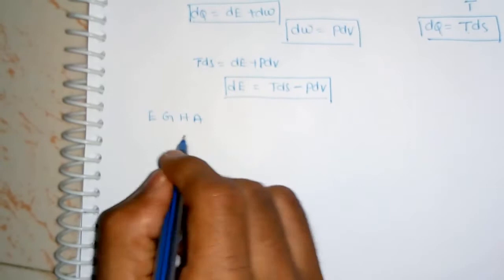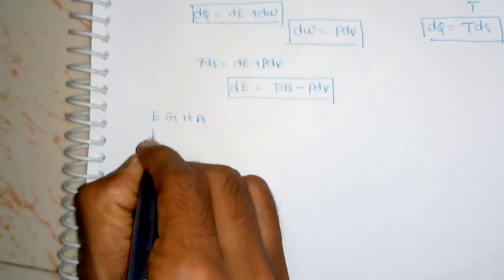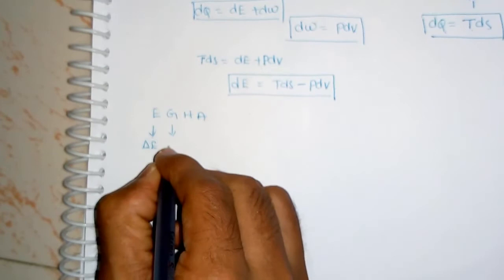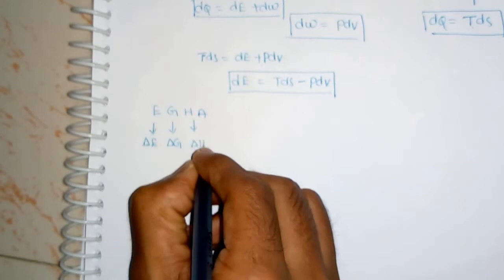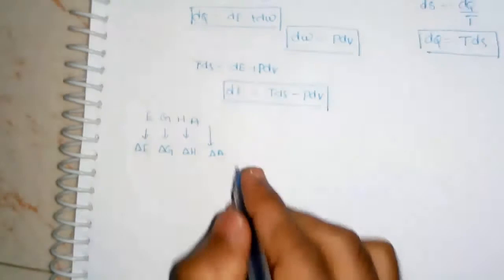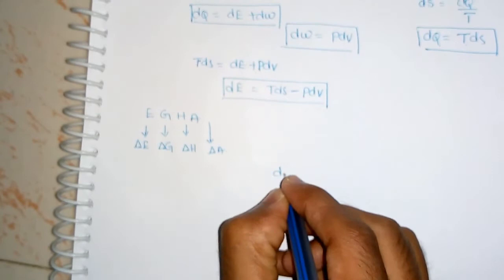EGA is a simple and easily remembered word — you already know the famous movie called EGA, so you can easily remember it. Here E is the change in internal energy, G is the change in Gibbs free energy, H is the change in enthalpy, and A is the change in Helmholtz free energy.